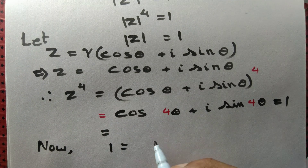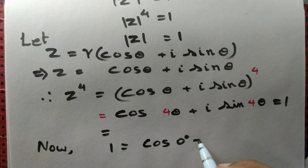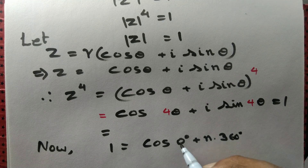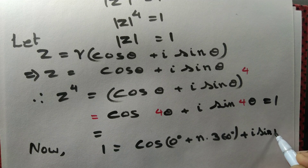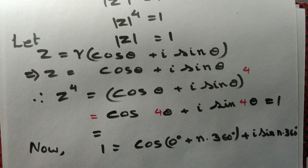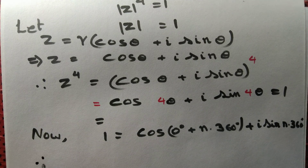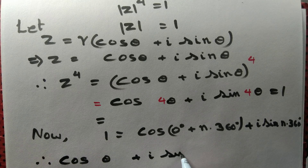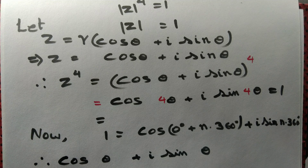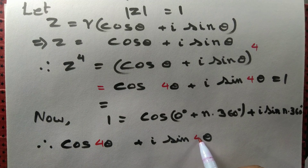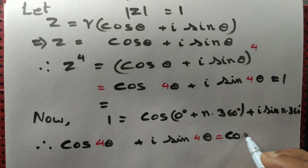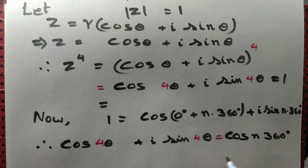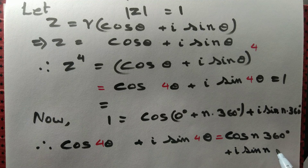Now, 1 can be written as cos(n × 360°) + i sin(n × 360°). Therefore, equating both sides: cos4θ + i sin4θ equals cos(n × 360°) + i sin(n × 360°).